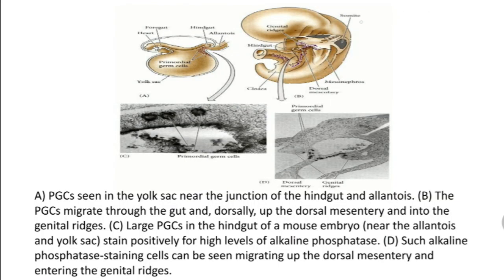These images show the process of germ cell migration in mammals. In the first image, primordial germ cells are accumulated in the allantois region on day 7.5 in the mouse. From the allantois, these primordial cells migrate to the yolk sac region.